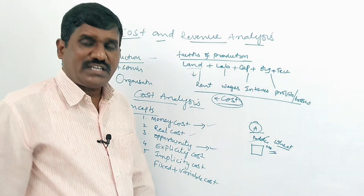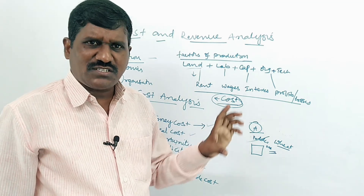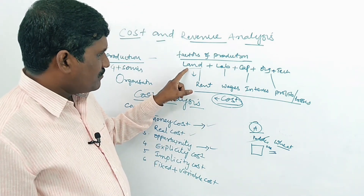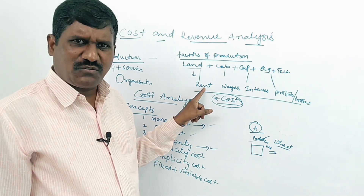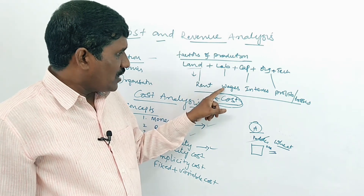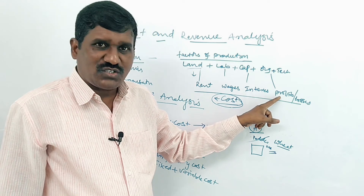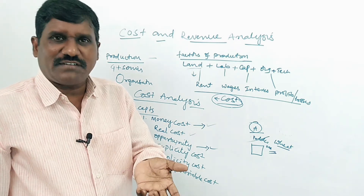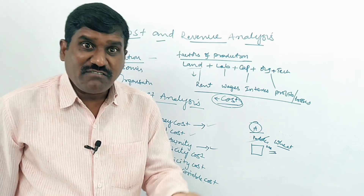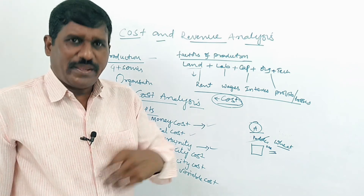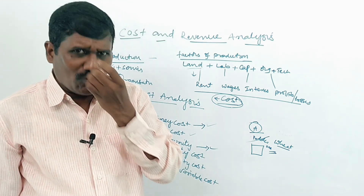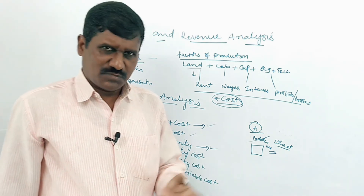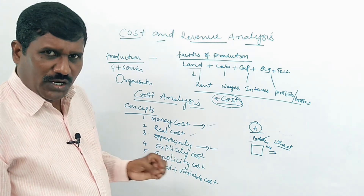Then explicit cost. What is explicit cost? The expenses which we can measure in terms of cash. For example, land — we pay rent; labor — wages; capital — interest; organization — profit. The amount which is paid for the rendering of services of the factors of production, such as electricity charges and transport charges, are all called explicit cost.